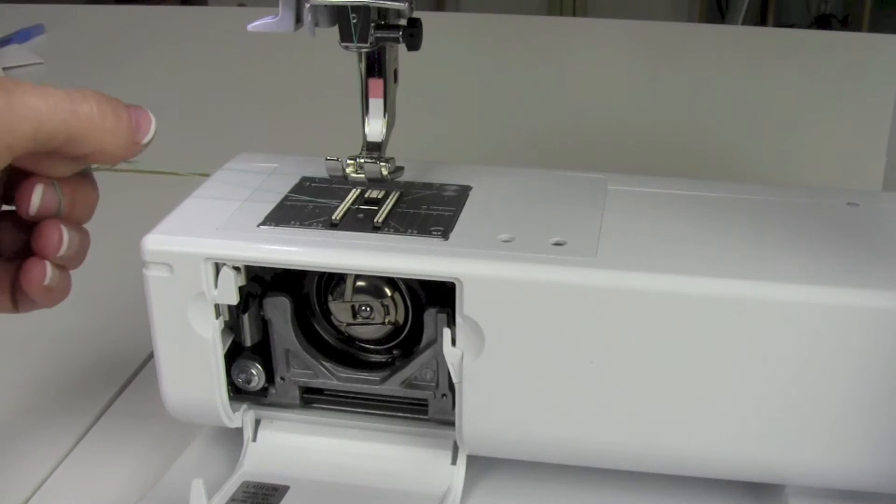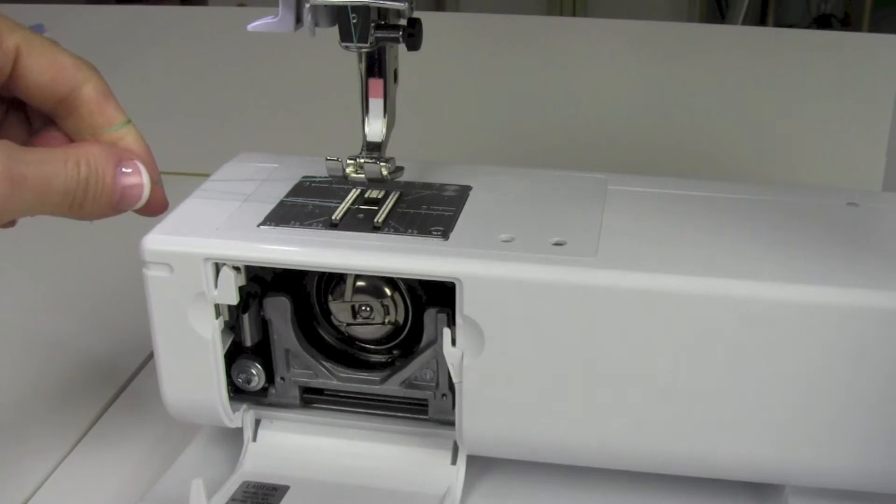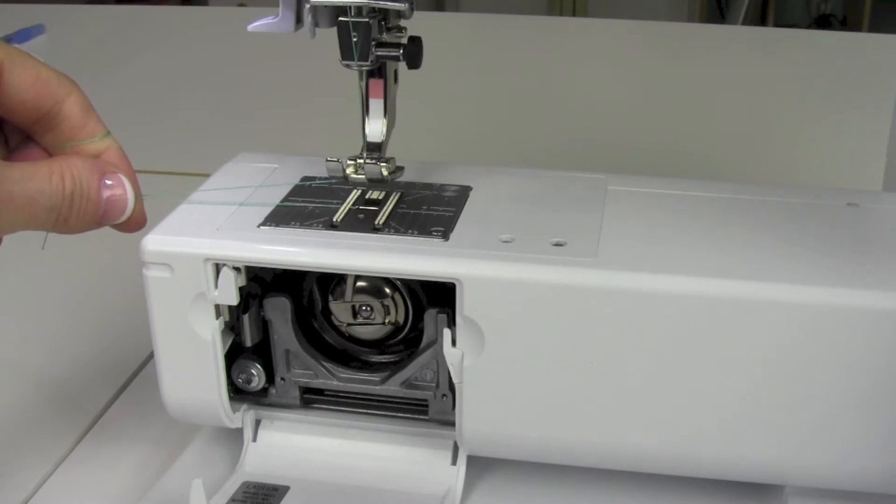First off, if you open up the bobbin case door, hold onto the threads off to the left side. We're going to turn our hand wheel.